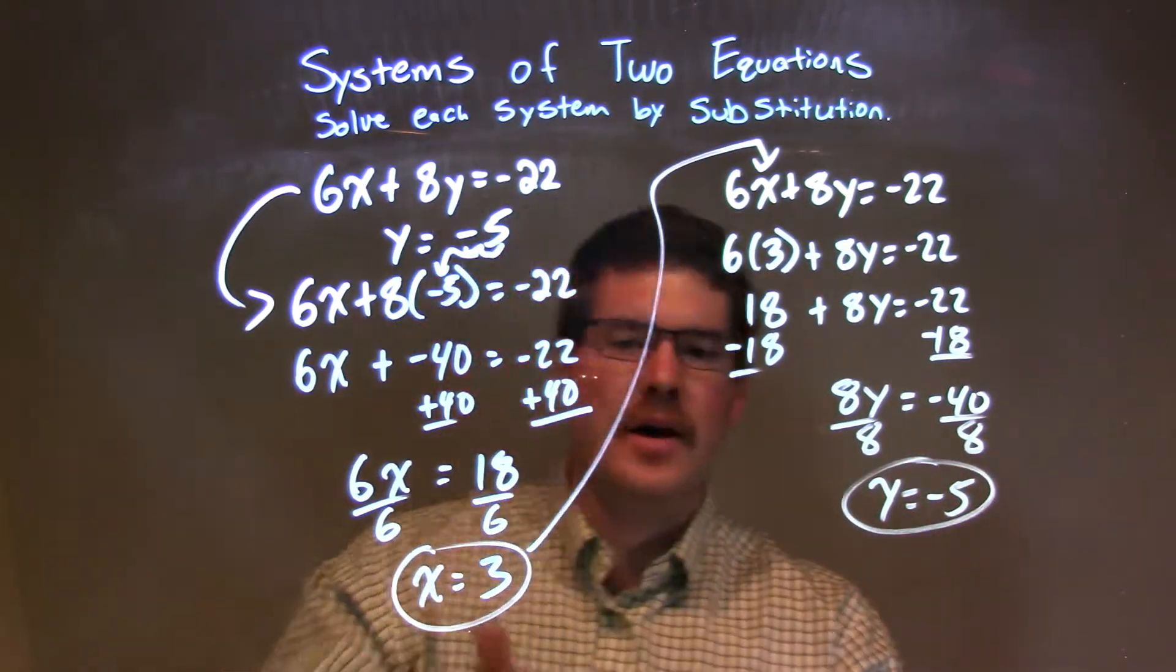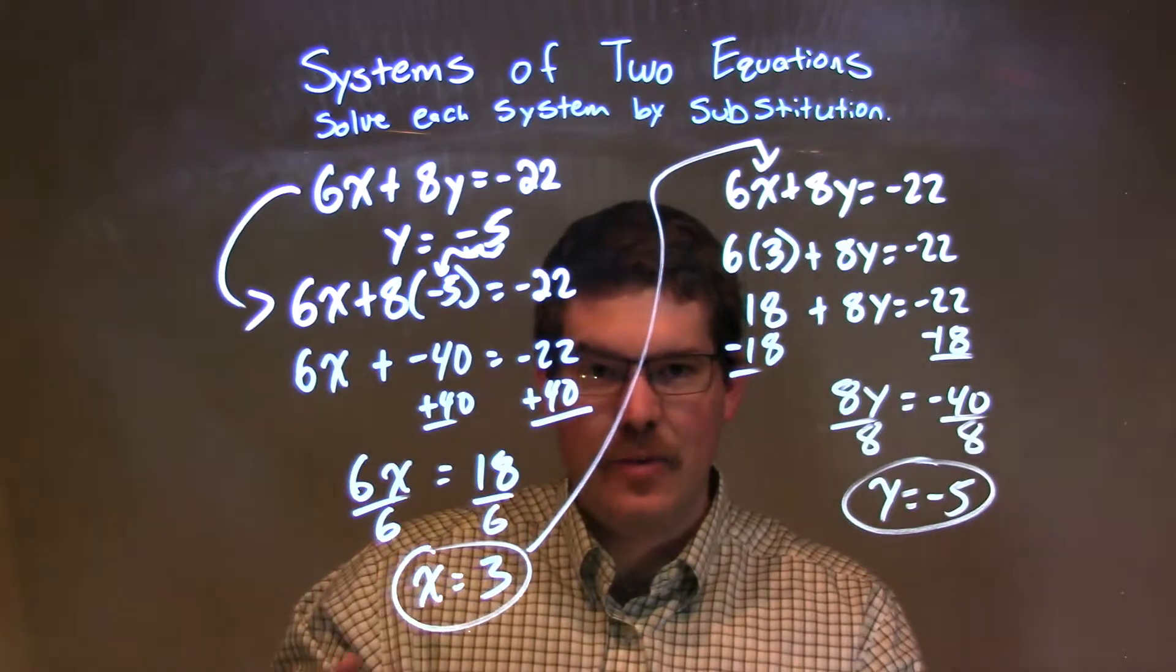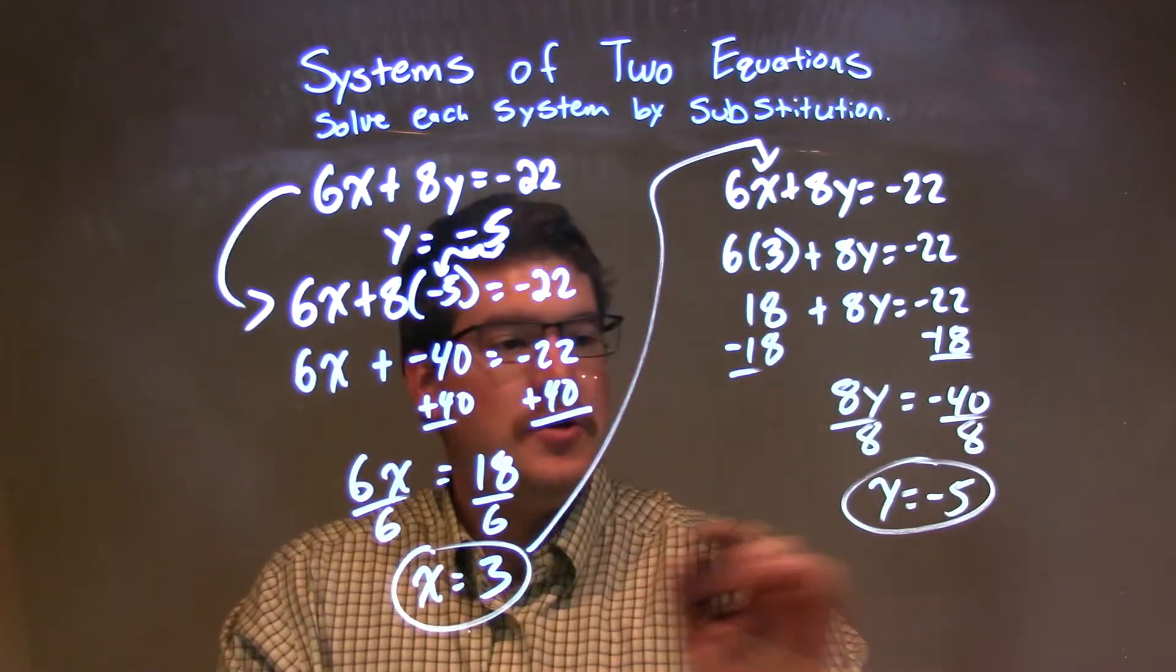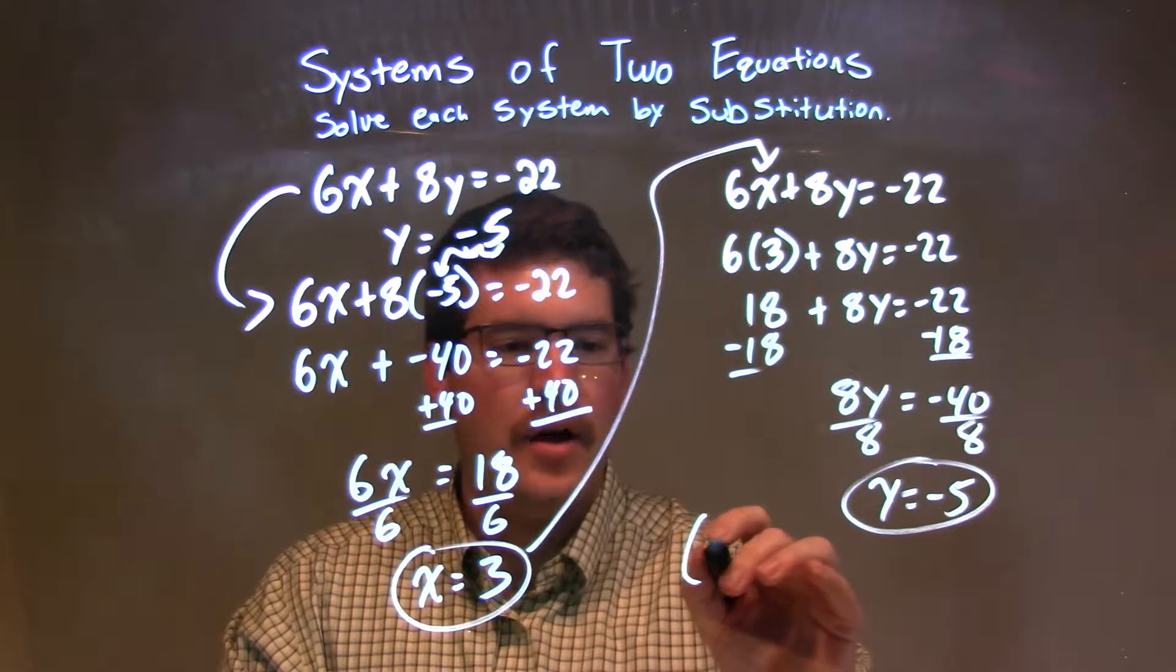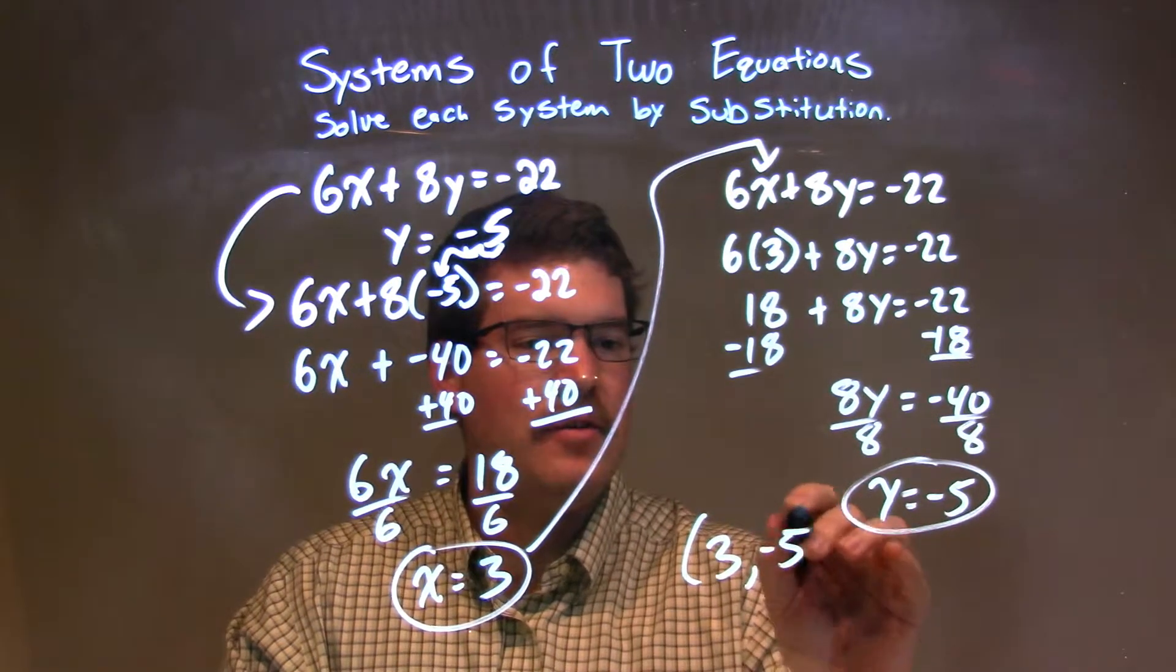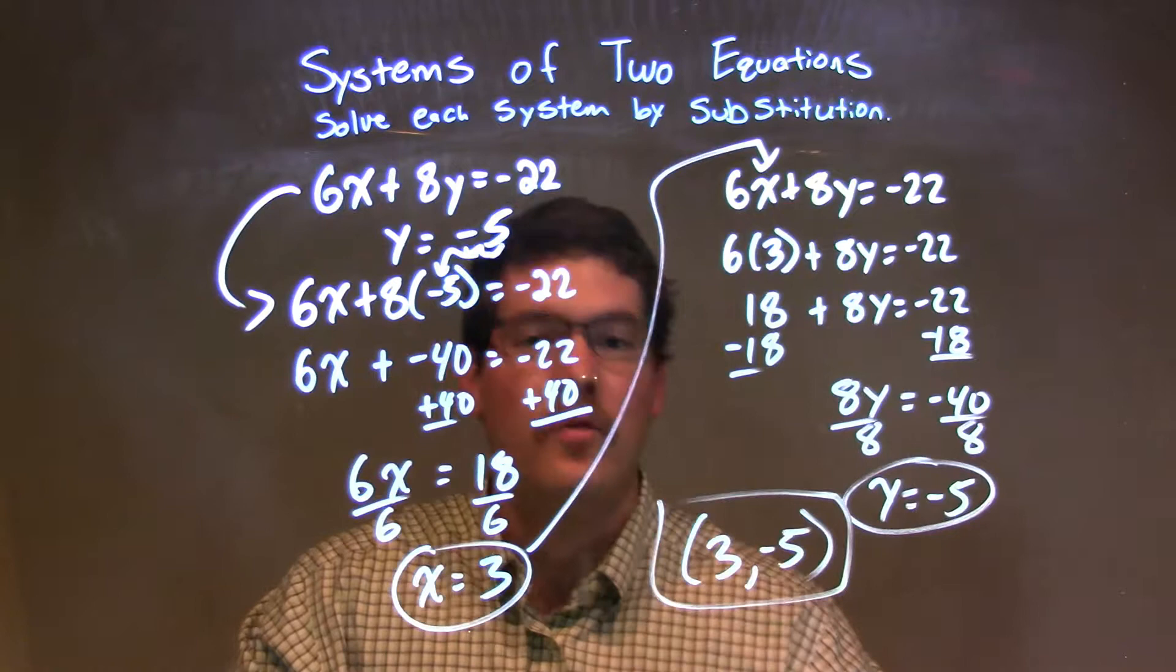Same answer we have here. Just solved it, got it a different way. So we have our two points. We have our x and y value. We have our coordinate point here of 3 comma negative 5. And that is our final answer.